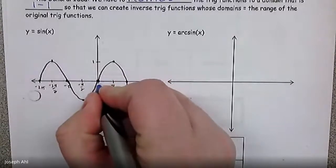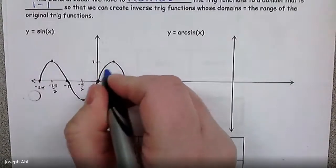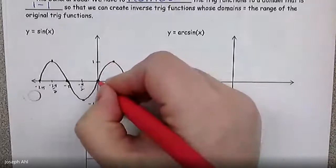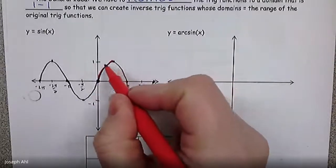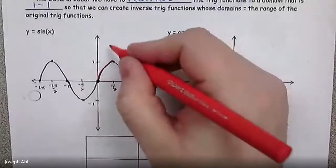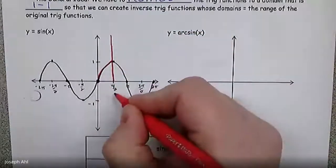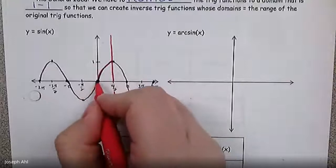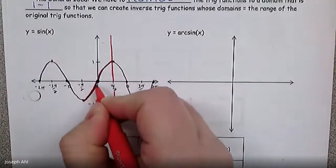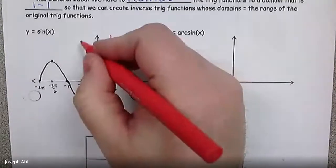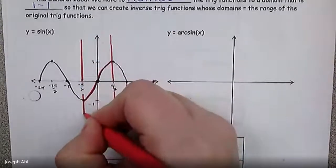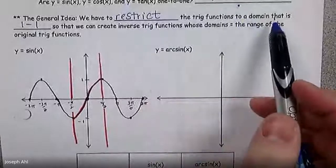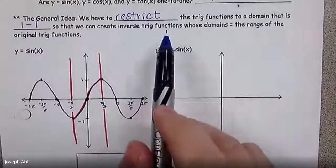Starting right at the origin (0, 0), how far can I go along the sine curve until I fail the horizontal line test? You can go all the way up until π/2, but the second I go beyond π/2, we fail the horizontal line test. I'll cut the curve there — one boundary at π/2. Going backwards to the left, I can go all the way to −π/2 before failing again. So the restriction on the domain of sine x is from −π/2 to positive π/2, so that the inverse is in fact a function.